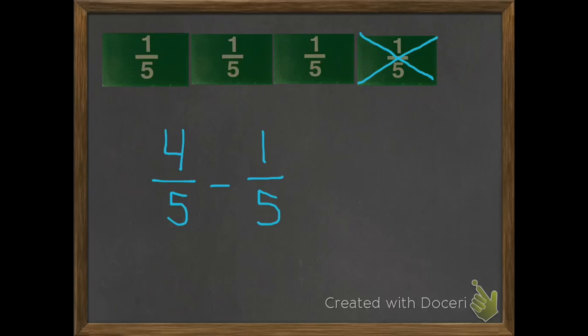And then how many did we subtract or take away? One of them, so 1 fifth. And how many of our fifths do we have left? 3 fifths.